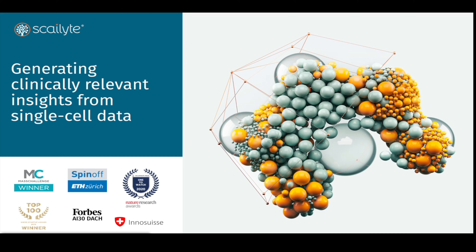The massive amount of data generated by single cell technologies has driven the development of computational tools to extract relevant insights. This tsunami of data motivated the establishment of Skylight as an ETH spin-off founded in 2017, on the basis of an AI algorithm called Skyvision, designed to extract clinically relevant information from single cell data. Our founders developed and decided to apply this algorithm to serve precision medicine by integrating and analyzing multi-omic single cell data for the discovery of very specific and sensitive biosignatures.